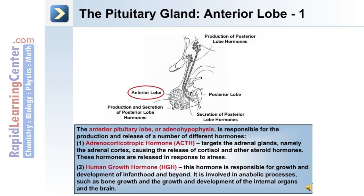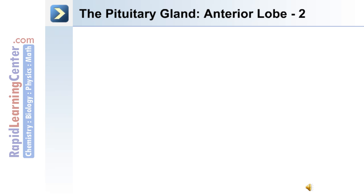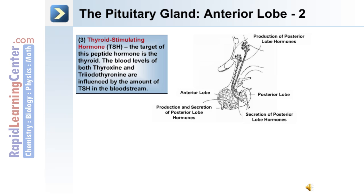Human growth hormone is responsible for growth and development from infancy and beyond. It's involved in anabolic processes such as bone growth and the development of internal organs and the brain. The third hormone produced by the anterior lobe of the pituitary gland is thyroid stimulating hormone, or TSH.